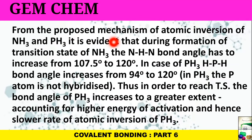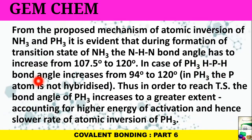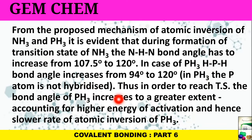From the proposed mechanism, it is evident that during the transition state of ammonia the N–H–N bond angle increases from 107.5° to 120°, whereas in PH3 the H–P–H bond angle increases from 94° to 120°. In PH3, the phosphorus atom is not hybridized, so to reach the transition state the bond angle must increase to a greater extent, resulting in a higher energy of activation. Hence, the rate of atomic inversion of PH3 is much slower than that of ammonia.